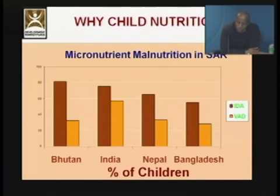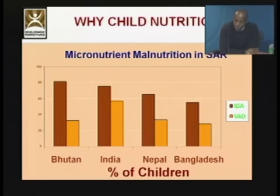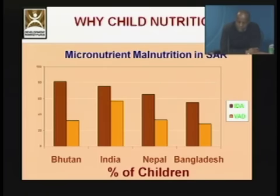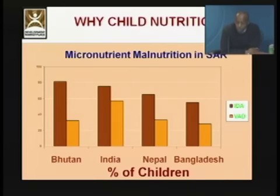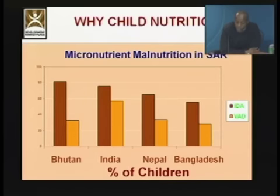The problem of child malnutrition is not only confined to indicators of underweight and stunting. We also see a high prevalence of micronutrient deficiencies. For example, if we look at iron deficiency anemia (IDA) in this table, we see that in the four countries chosen for this graph, the levels of iron deficiency anemia range between 55 and 81 percent, which is extremely high and the highest in the world as well.